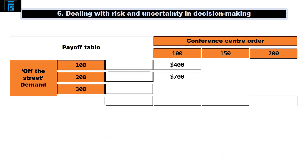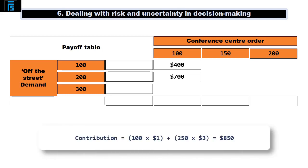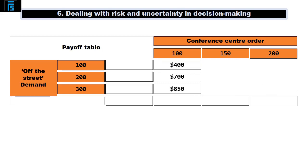Moving down to the next row, here we've agreed to sell 100 sandwiches to the conference centre, and we have demand for 300 sales to off-the-street customers. However, we have a capacity limit of 350 sandwiches per day, so we can only supply 250 to off-the-street customers. We must supply 100 to the conference centre, as we've signed an agreement to do so. This therefore earns us a contribution of 100 × $1 plus 250 × $3, which is $850.